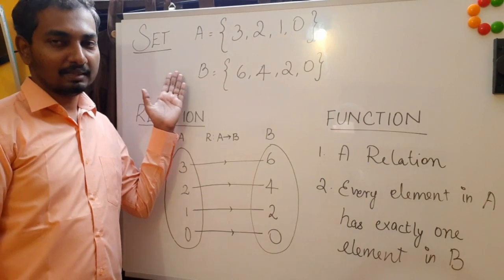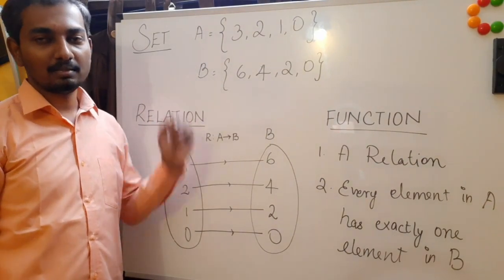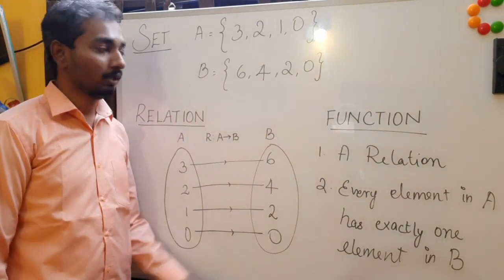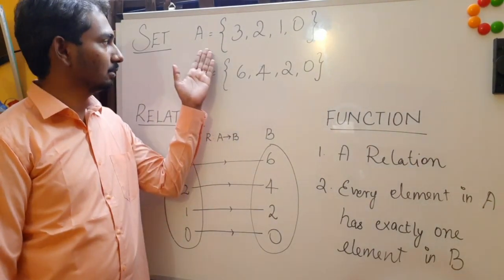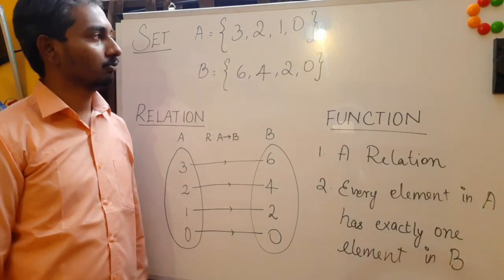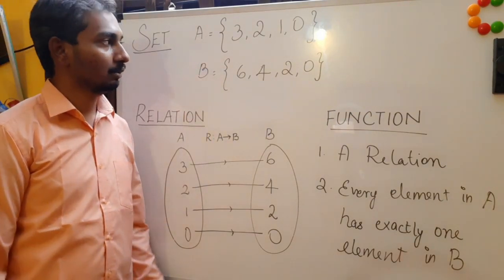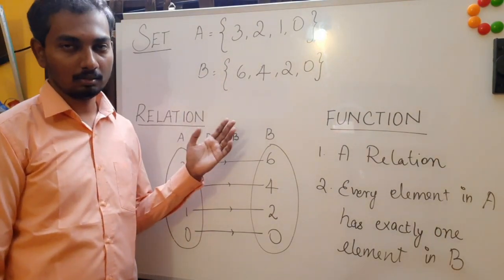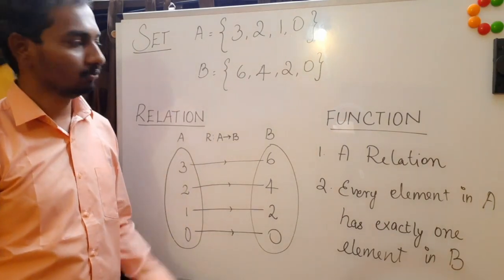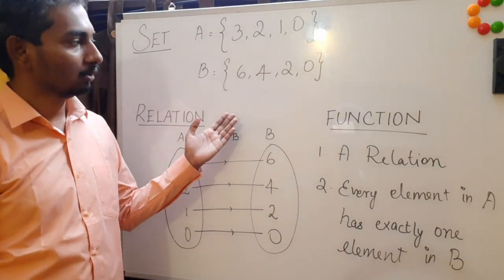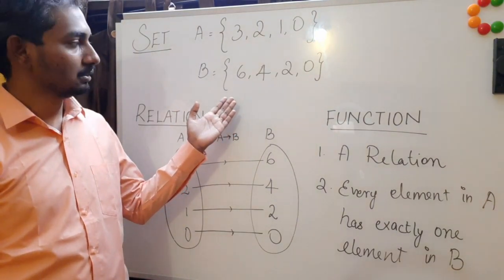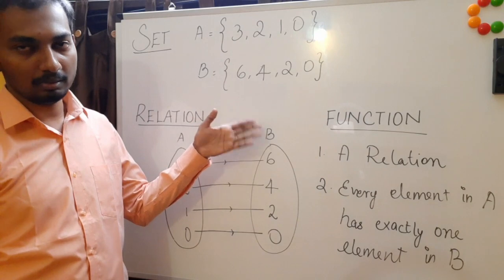We know what a set is. A set is a collection of well-defined elements. We have two examples here: set A and set B. Set A is a collection of four numbers, namely 3, 2, 1, 0, and we have set B which is a collection of again four numbers, namely 6, 4, 2, and 0.